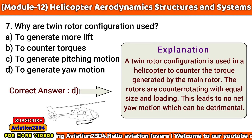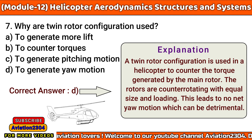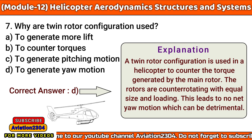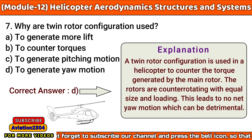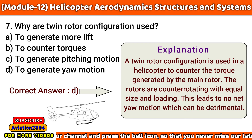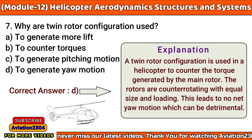Why are twin rotor configurations used? A. To generate more lift, B. To counter torques, C. To generate pitching motion, D. To generate yaw motion. The correct answer is B. A twin rotor configuration is used in a helicopter to counter the torque generated by the main rotor. The rotors are counter-rotating with equal size and loading, which leads to no net yaw motion, which can otherwise be detrimental.